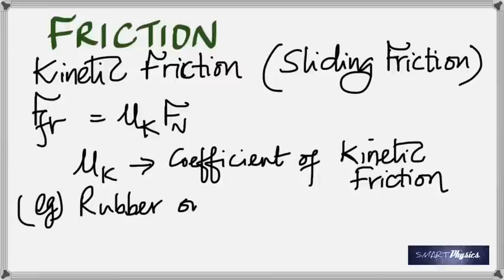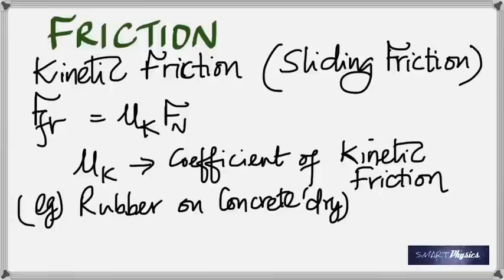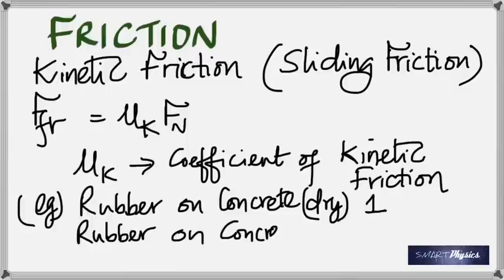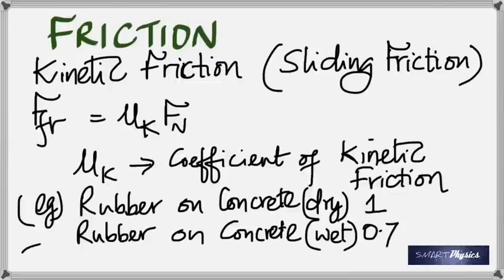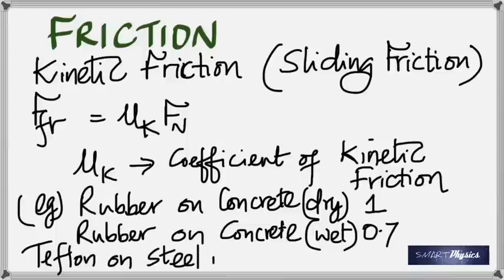Some typical values of mu_k: for rubber on dry concrete, it's 1.0. If it rains and the concrete is wet, it drops to 0.7 — a 30% decrease. Friction is less on a rainy day, giving you a bigger chance of slipping. Hydroplaning is not a joke. We need to know this when we drive.